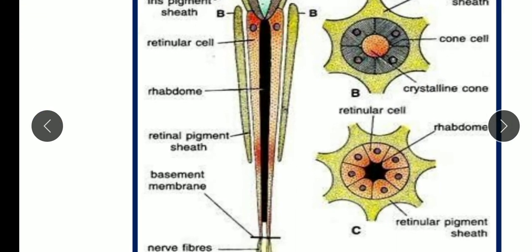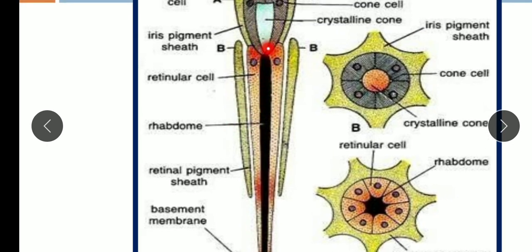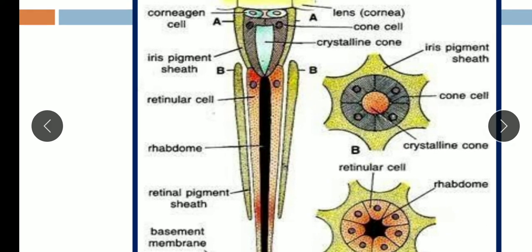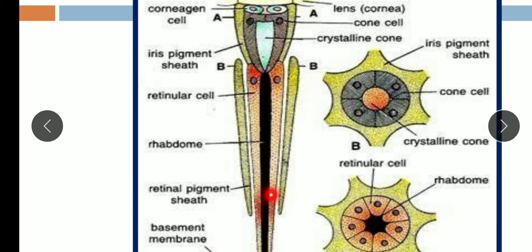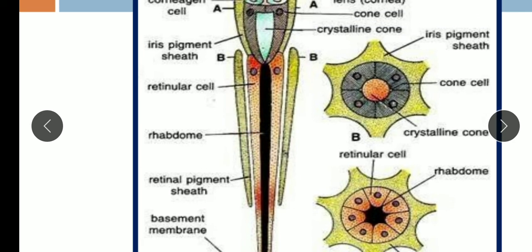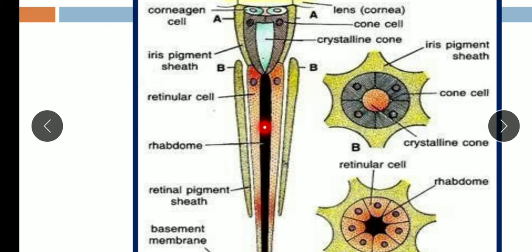The sensory or image-forming region lies just beneath the crystalline cone. Seven retinular cells are present here; these retinular cells are sensory in nature and they rest on a basement membrane. The inner surface of these cells is modified to form a receptive area called the rhabdomere. Collectively, all the rhabdomeres form the rhabdom.